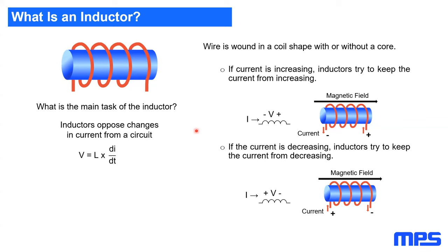What is the main task of the inductor? Inductors oppose the change in current in a circuit — they are responsible for providing a constant current. If current is increasing, the inductor tries to keep it from increasing by storing energy. If current is decreasing, it releases that stored magnetic energy back into the circuit. Inductors have no polarity, so they can be used in both directions.